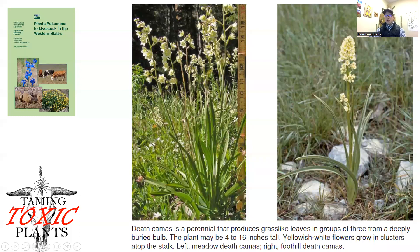These pictures give you a visual impression of what we're talking about here. This is a perennial with grass-like leaves, often in groups of three, especially when it's a very young plant. These plants might be anywhere from 4 to 16 inches tall, and the flowers are often white to yellowish-white in clusters elevated on the stalk above the basal leaves. In the picture on the left you can see meadow death camas, and on the right, foothill death camas.